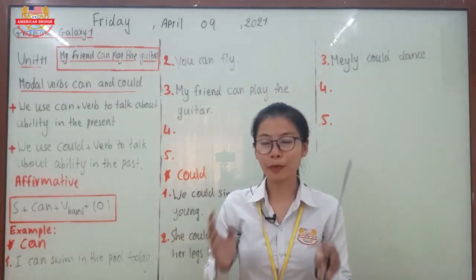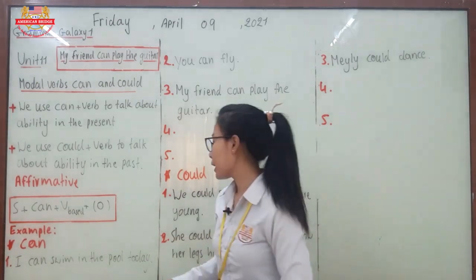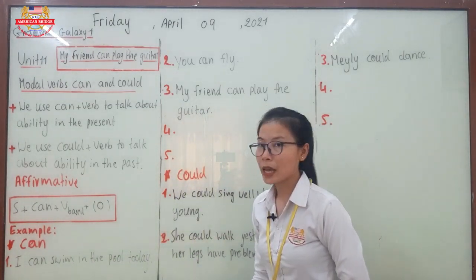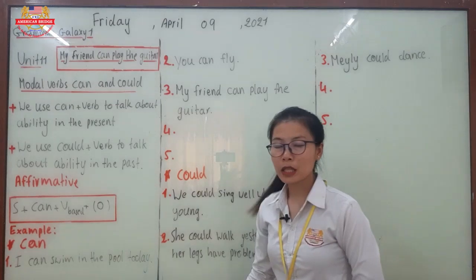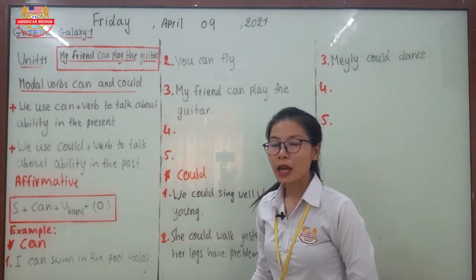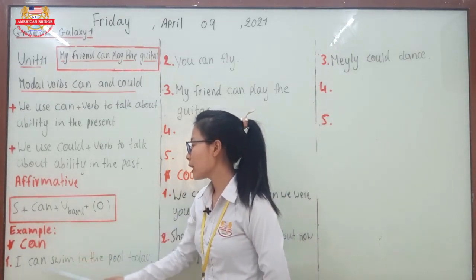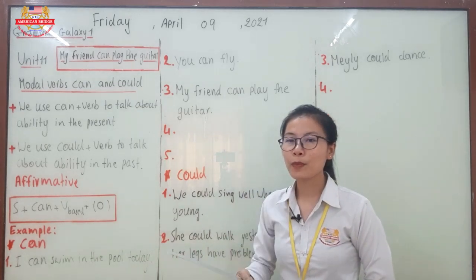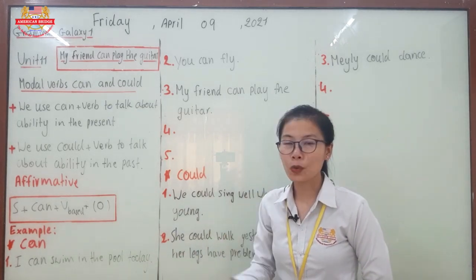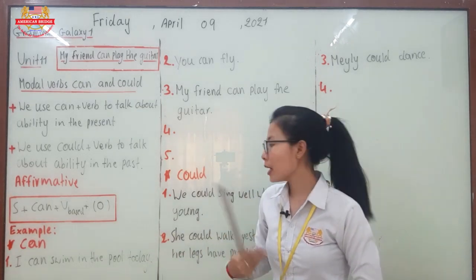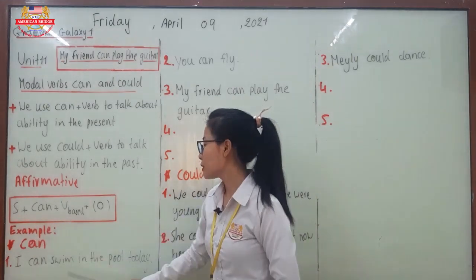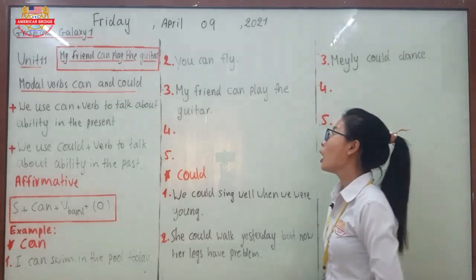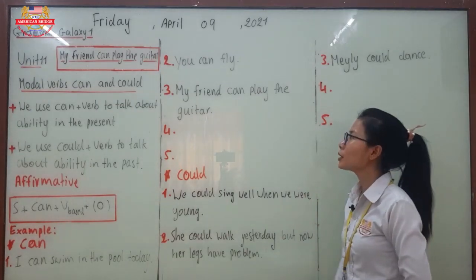For example: 'I can swim in the pool today.' Here, 'today' is the time expression showing the present. This sentence shows the ability of the person — what they can do. 'I can swim in the pool' shows that the person has the ability to swim.